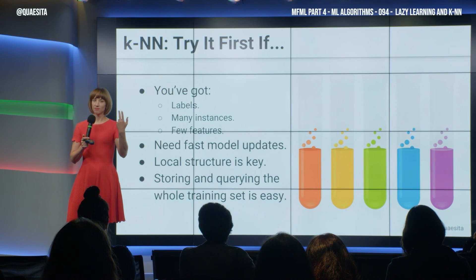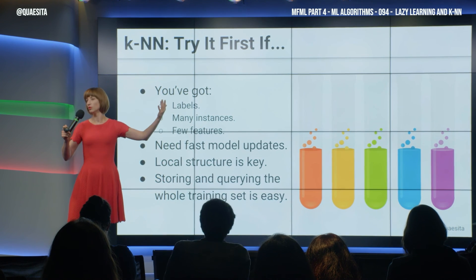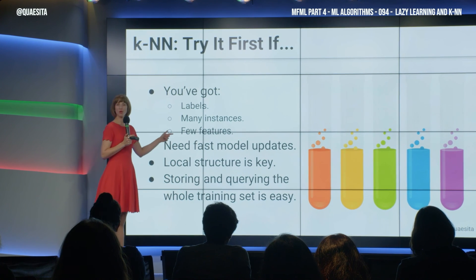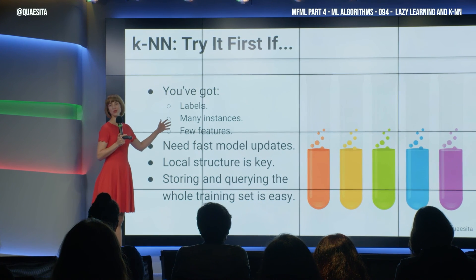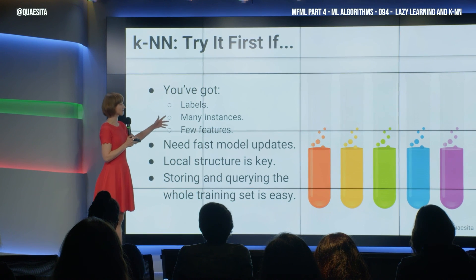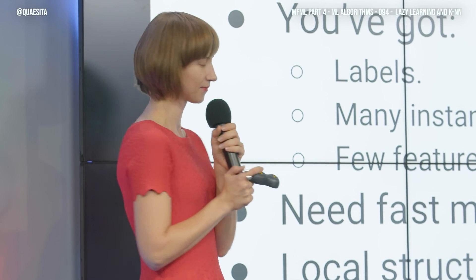It doesn't just have to be two features — we can do this for more features, but be careful. This really requires a tall, skinny dataset. It doesn't like situations where you've got too many features and not enough instances. It really suffers from what is called the curse of dimensionality. Such a machine learning term — it's great.